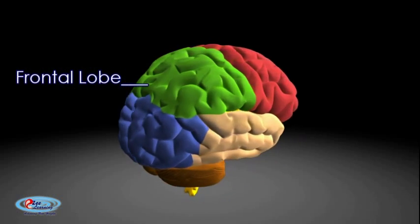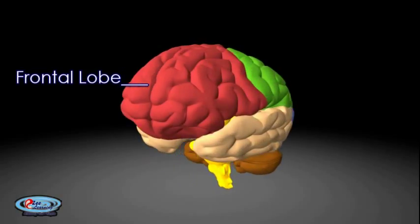The frontal lobe, located at the front of each cerebral hemisphere and positioned anterior to the parietal lobe, contains most of the dopamine sensitive neurons in the cerebral cortex.